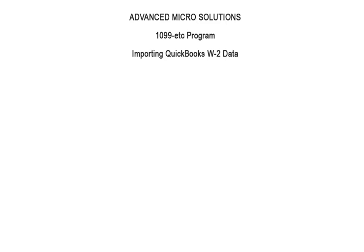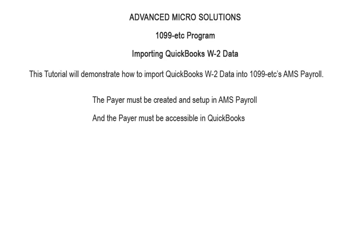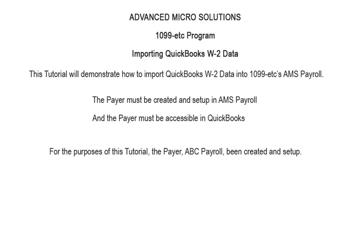Welcome to the 1099-ETC program. This tutorial will demonstrate how to import QuickBooks W2 data into AMS Payroll. Once the data is imported, it can be exported to the W2 forms. To begin, the payer should be created and set up in the 1099-ETC program in AMS Payroll, and you will need access to the payer in QuickBooks. In this tutorial, the payer has been created and set up and is ready for the QuickBooks import.